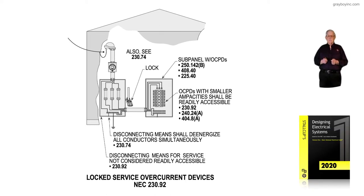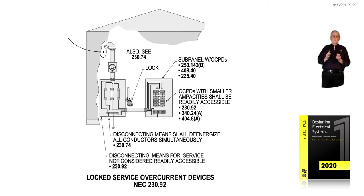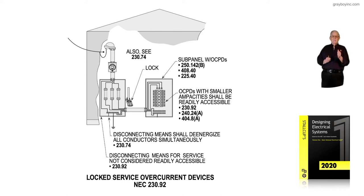This illustration deals with locked service overcurrent devices in accordance with 230.92. Reviewing chapter 6, we showed a service disconnect, as you see in this figure, where we could have the service protective overcurrent devices — such as fuses or a breaker — installed outside the building, and we could supply overcurrent devices inside the building of a lower rating than the rating of the fuses or circuit breaker in the service equipment outside the building.